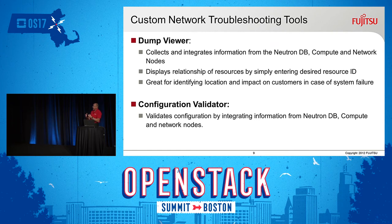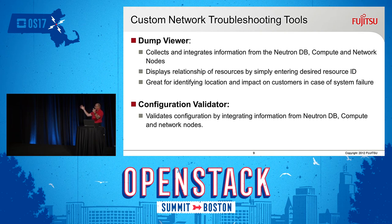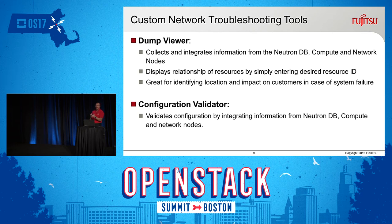We also worked on building custom network troubleshooting tools. When you're supporting a lot of customers in a public cloud environment, it's really helpful to be able to diagnose problems. Since networking is such a critical element, we wanted to collect and integrate information from Neutron compute and network nodes and display the relationships of all these resources — there are thousands and thousands of nodes and network connections. We created a configuration validator that can look at all the information from these different sources and give our troubleshooting teams the information they need to get to the heart of the problem. In just one of our regions, we have 20,000-plus connections that have to be managed in a multi-tenant environment.